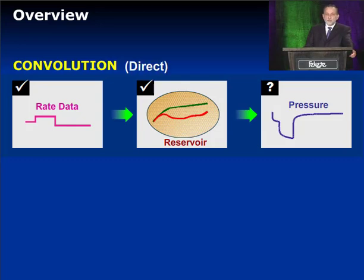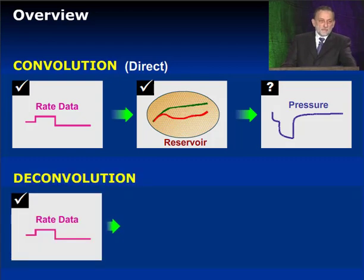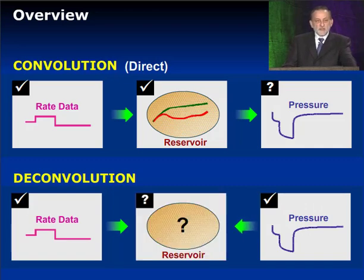It's a direct process. In real life, though, we often have measured production data. We have the measured corresponding pressures, and what we're trying to do is extract the reservoir description from that information. That is deconvolution.